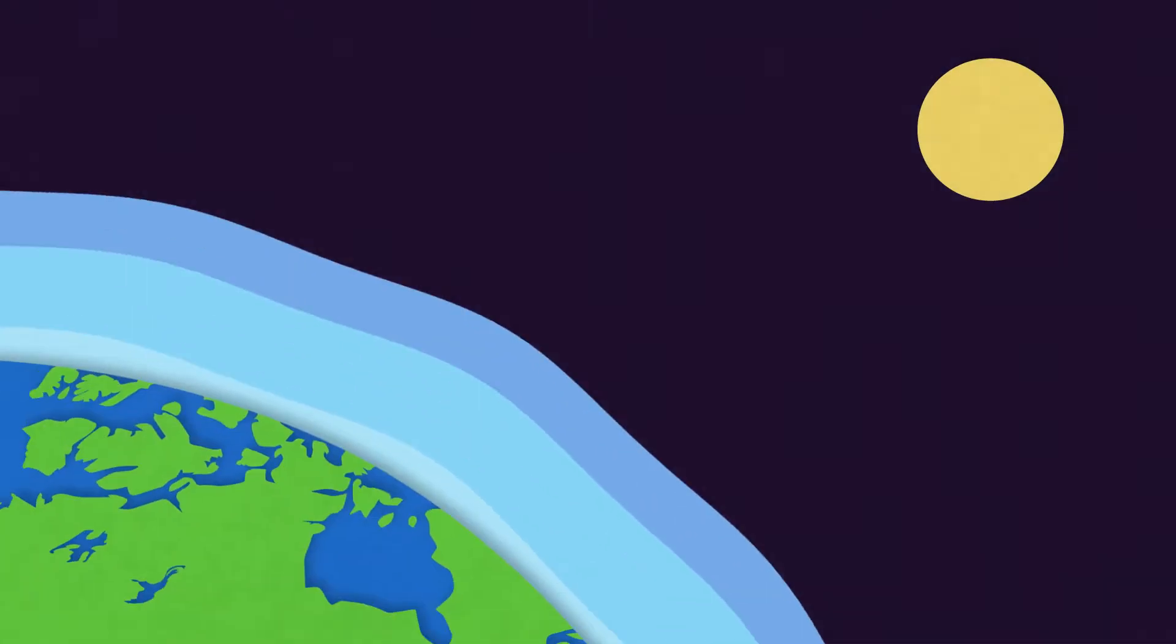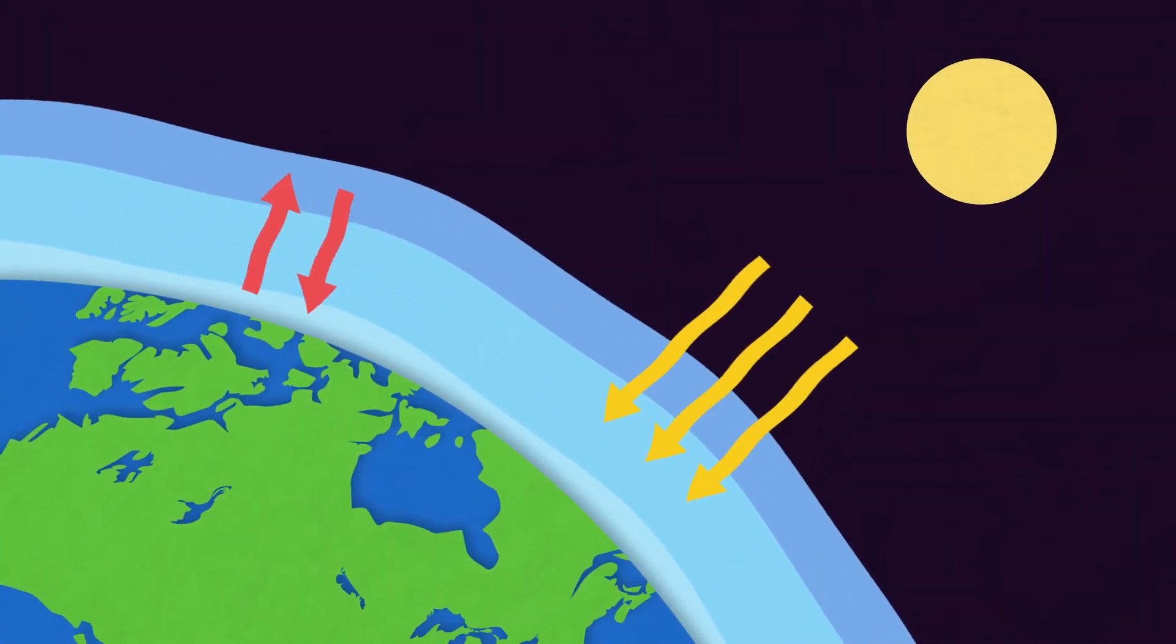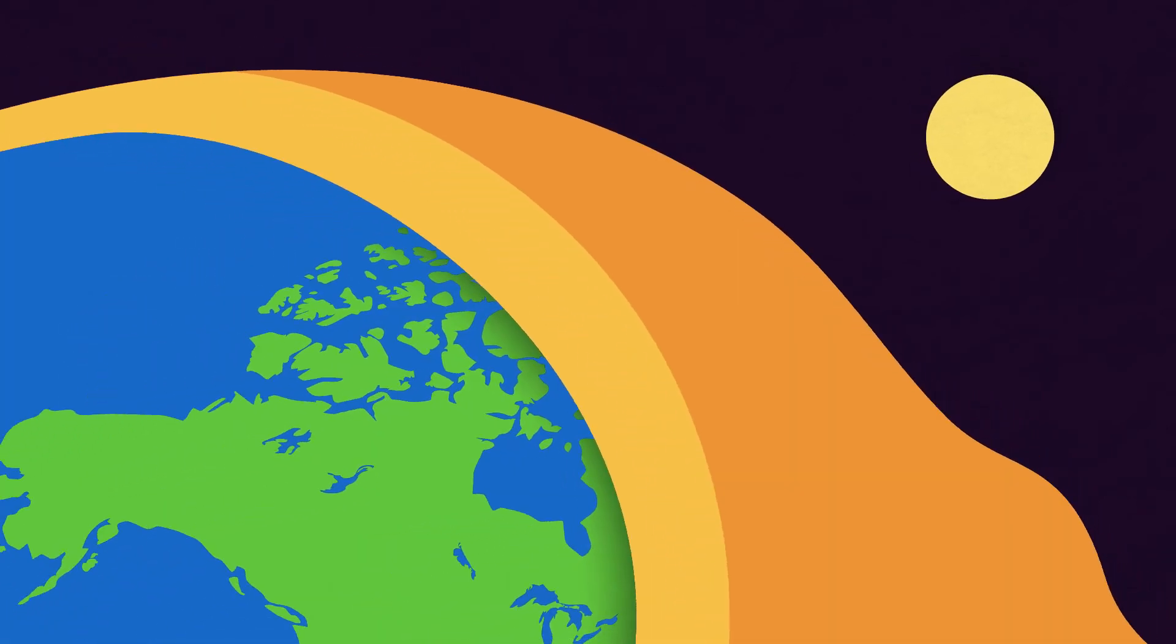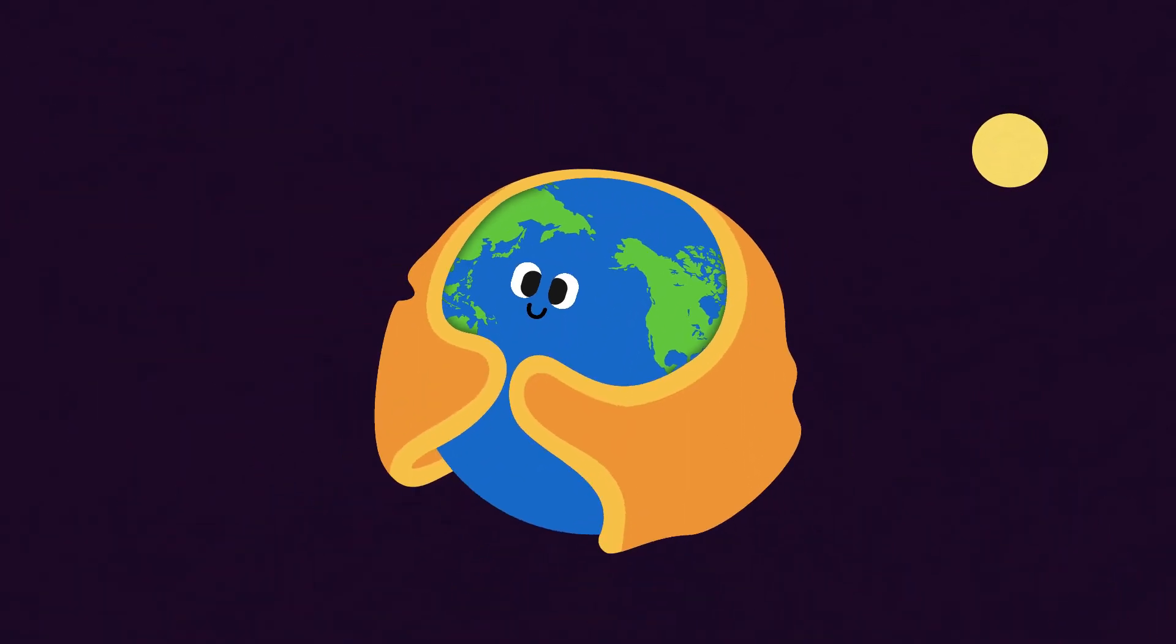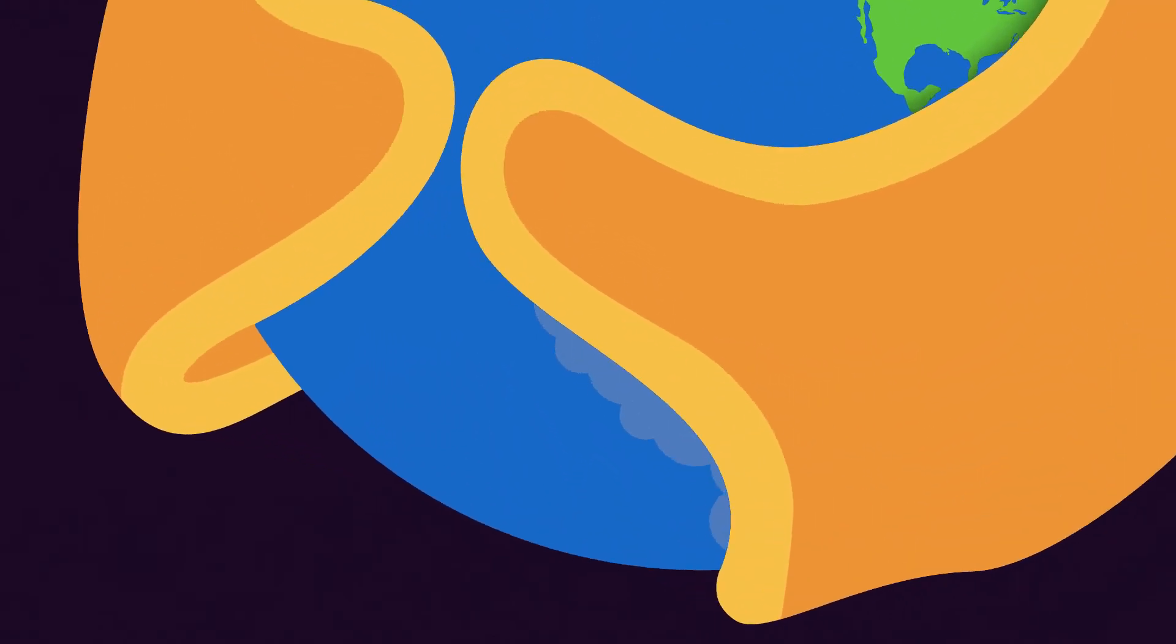These gases trap heat from sunlight in the atmosphere, forming a kind of blanket around the Earth. This is a good thing, as without them our planet would be too cold to sustain life. However, when too many greenhouse gases are released, it raises the amount of heat that's trapped, causing global warming.